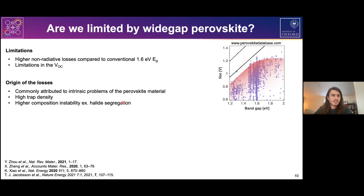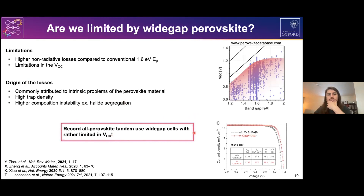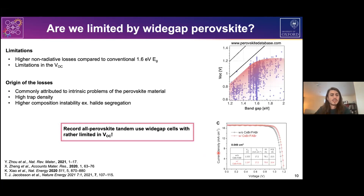As an example of the state of this system, the wide-gap perovskite used for what I believe is still the current record for all-perovskite tandems still shows VOC around 1.2 volts for 1.8 eV cells, meaning there is still room for improvement in the wide-gap perovskite and the whole perovskite tandem as well.